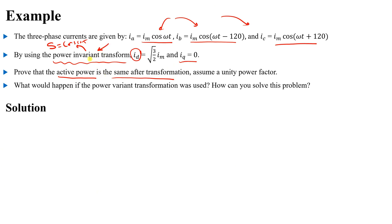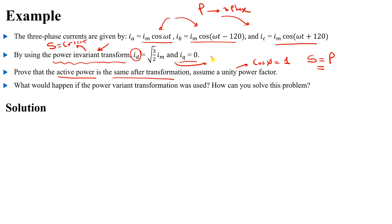We want to prove that the active power is the same after this power invariant transformation. We assume the power factor is unity, cosine φ = 1, which means the apparent power equals the active power. The approach is: compute active power in the three-phase system, compute it in the dq frame, and compare them.